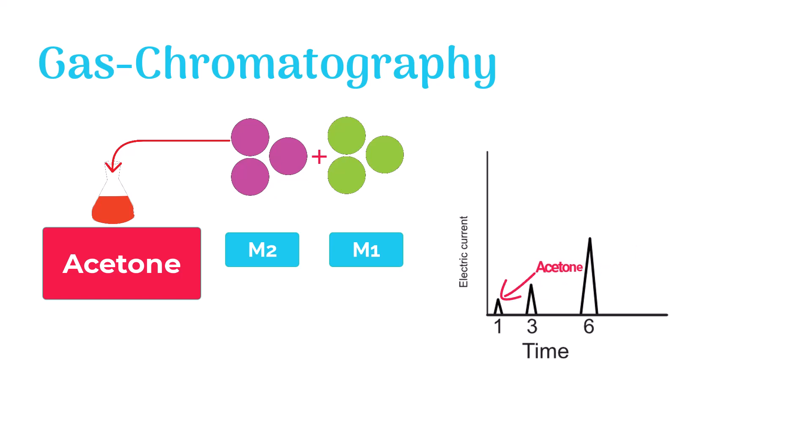The first peak represents acetone. The second peak represents M1 component of the sample. The third peak represents M2 component of the sample. Area of third peak is the highest, so it means the concentration of M2 is greater than M1 and acetone molecules in the mixture.